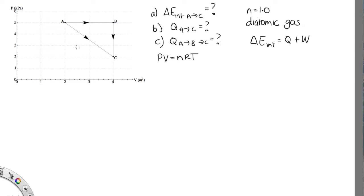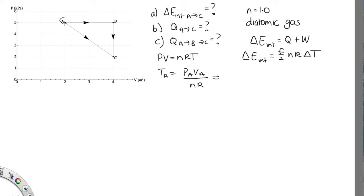We can use this to find the temperature at A and the temperature at C. Then we can use our other equation for the change in internal energy, that it's equal to F over 2 times nR times the change in temperature. The temperature at A is equal to the pressure at A times the volume at A over nR. The pressure at A is 5 kilopascals, so that's 5,000. The volume at A is 2 meters cubed, the number of moles is 1, and R is 8.314. So this is 10,000 divided by 8.314, giving us 1,202 kelvins.